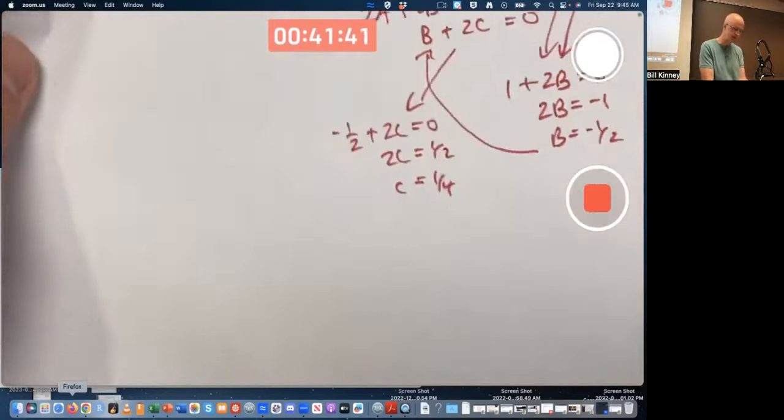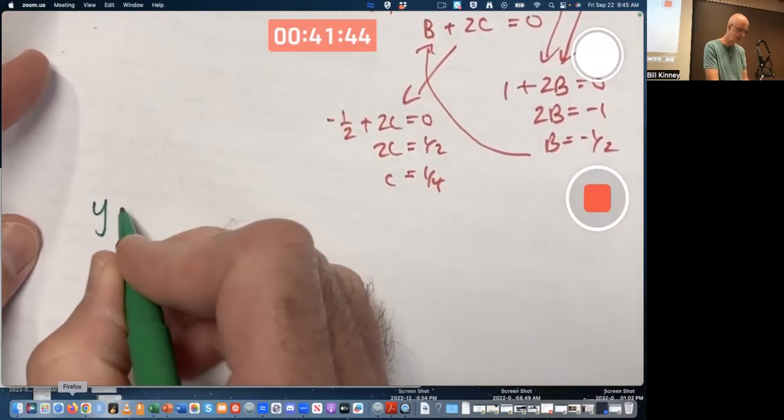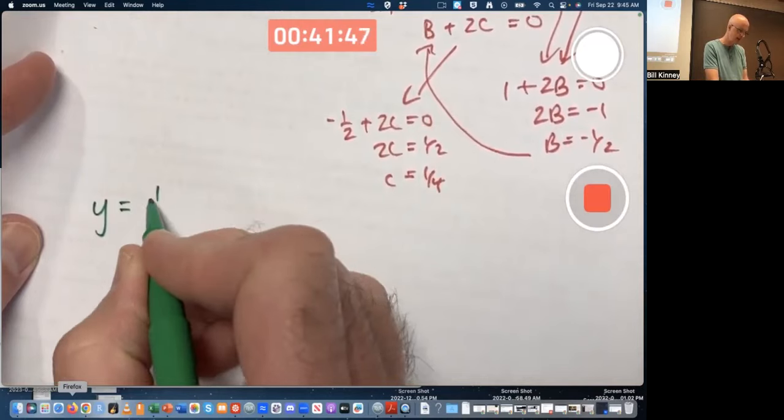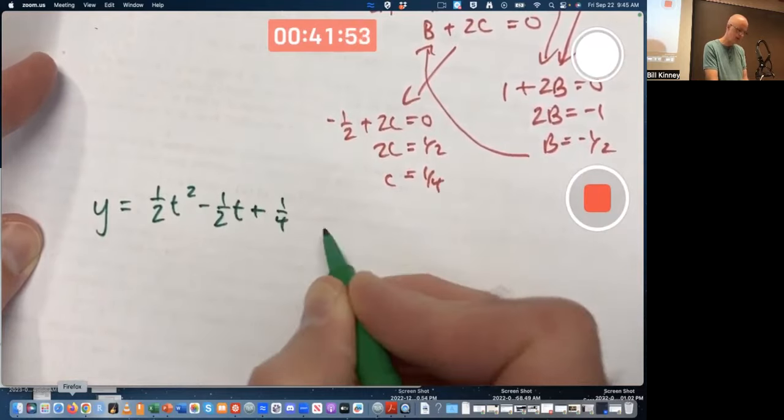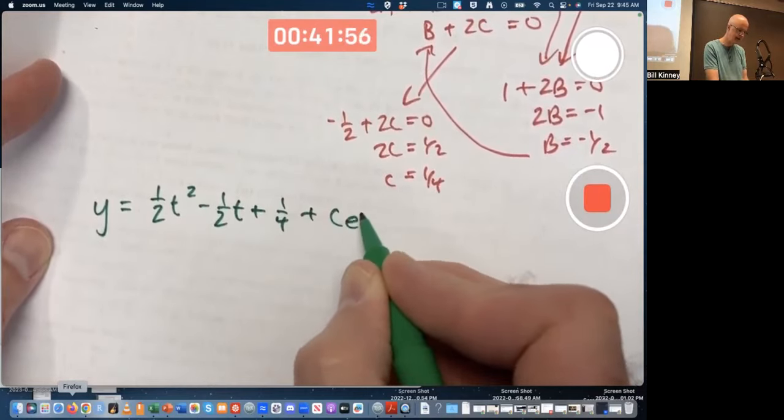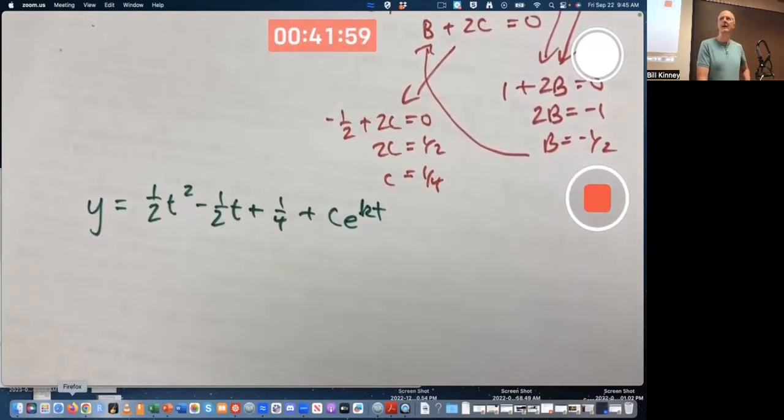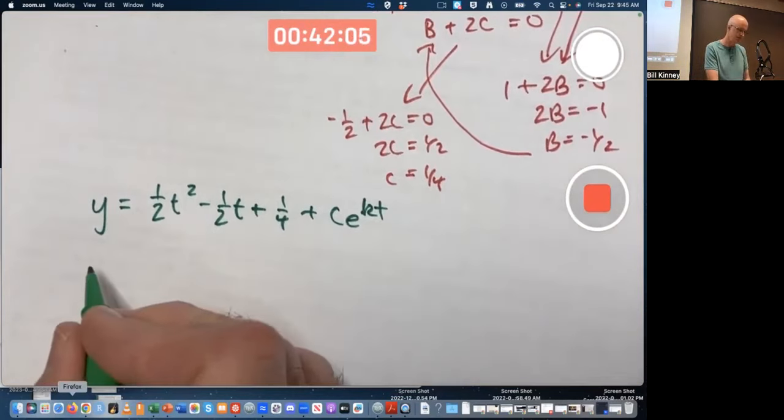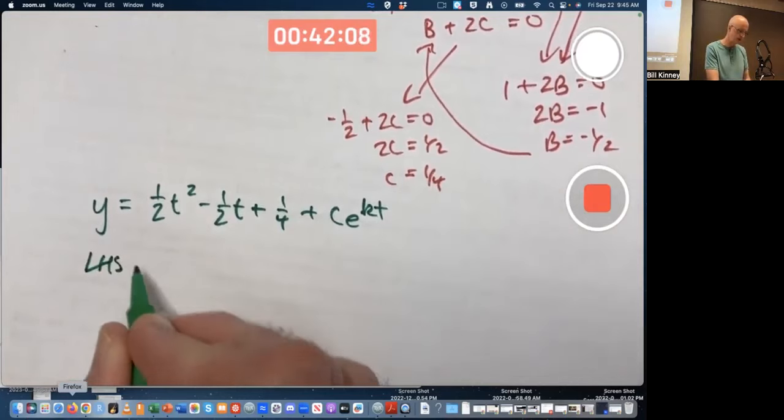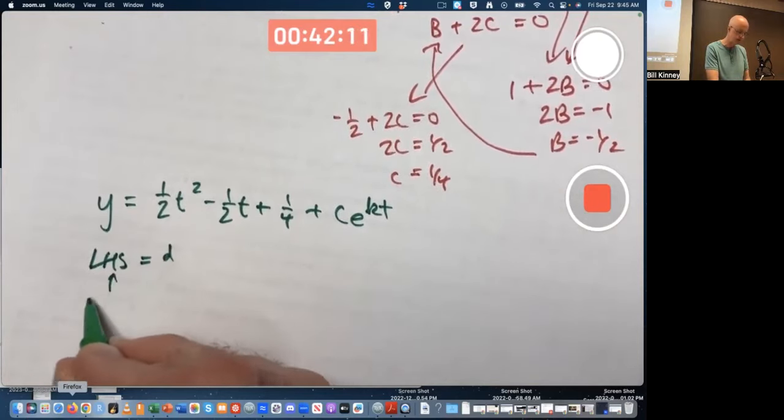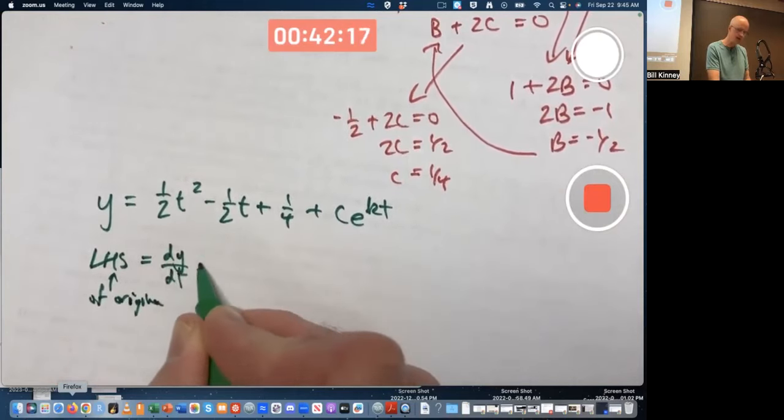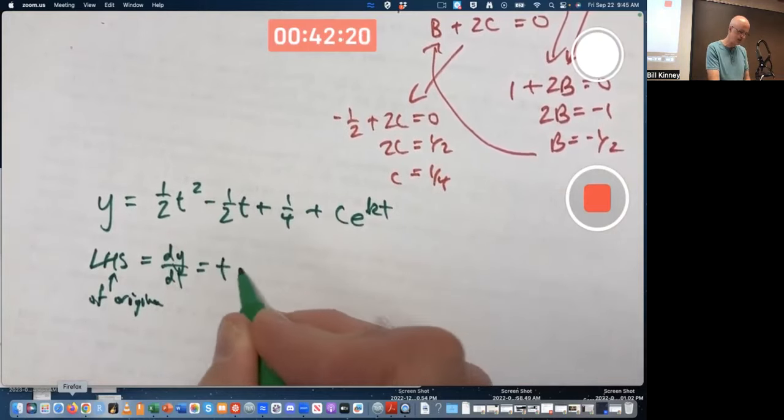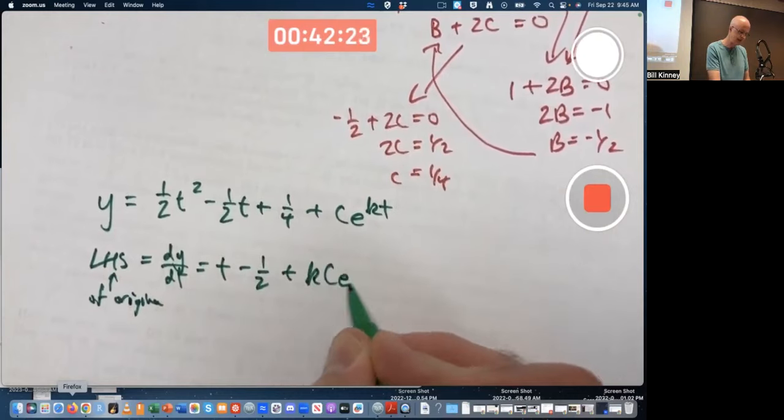So let's do that now. This is a preview of lots of things. You're going to be doing problems like this next week. So again, a was one-half, b was negative one-half, and c was one-fourth. And then we've got this other term, c times e to the kt. And I'm wondering what value of k will make this solve the differential equation, if any. There is a value of k that works. The left-hand side of the original differential equation, it's just dy/dt. So differentiate this. Get t minus one-half plus kce to the kt. Chain rule.